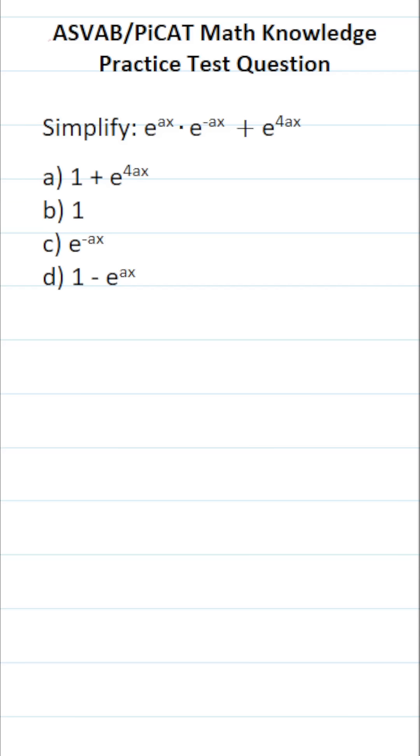This math knowledge practice test question for the ASVAB and PICAT says simplify e to the ax times e to the negative ax plus e to the 4ax.